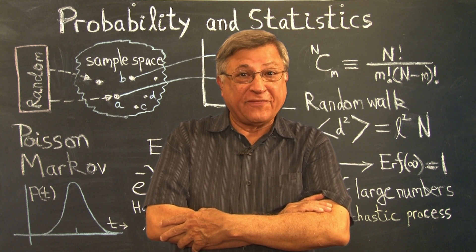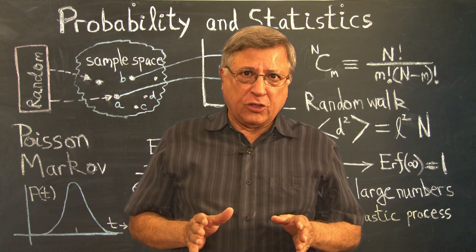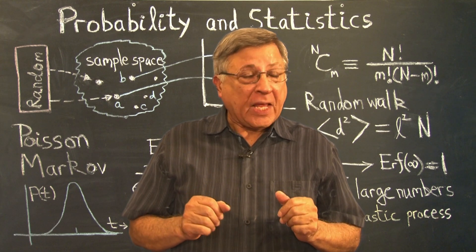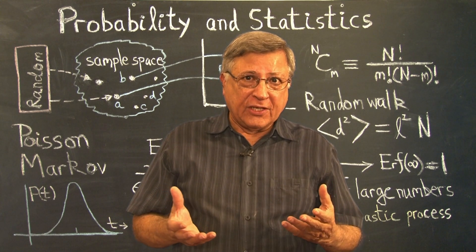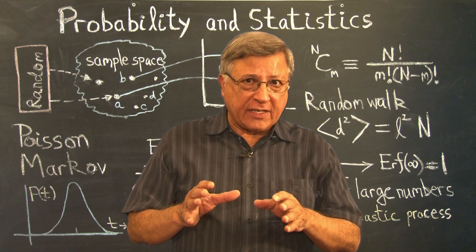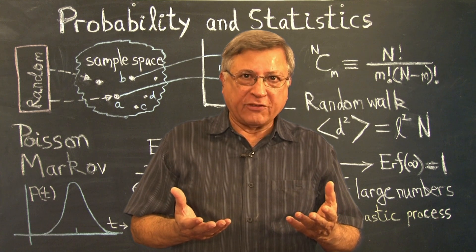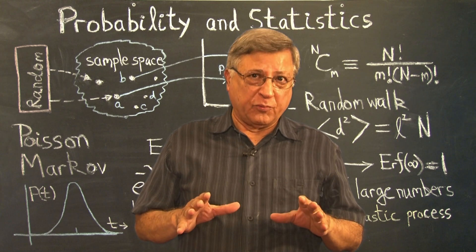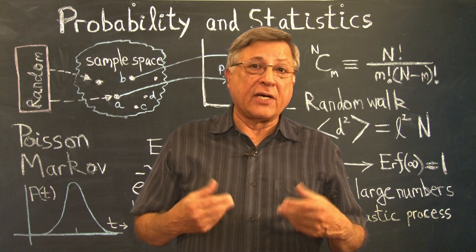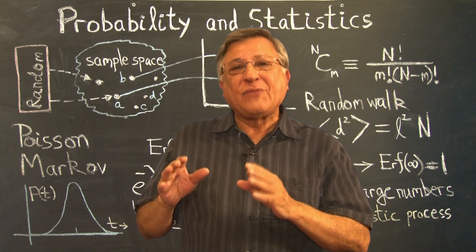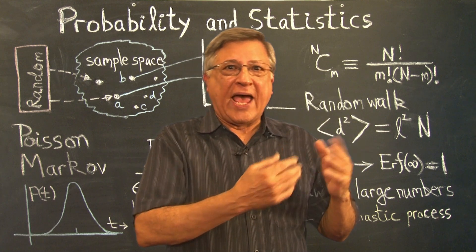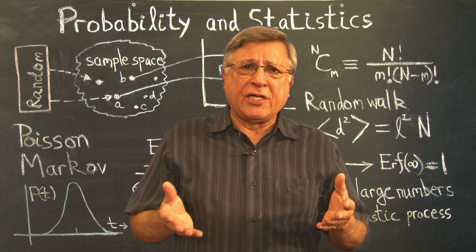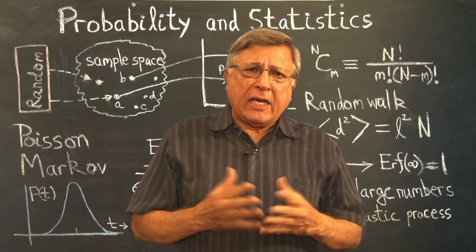To calculate probabilities we first need to learn to count. In this lecture we'll learn how to do combinatorics, deal with permutations and combinations of objects. This will tell us how big the sample space is and how many times a particular event can happen, which means we will be able to calculate the probability. We will also learn how to calculate conditional probabilities — compound events where something has already happened and we want to know the chance of something else happening. This is very important in process control, in engineering, and practically everything.